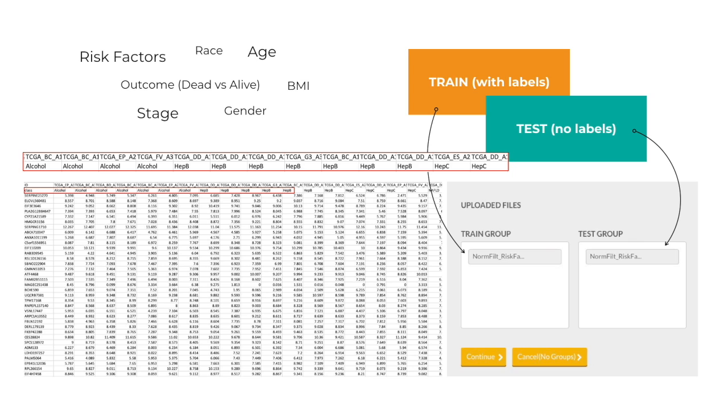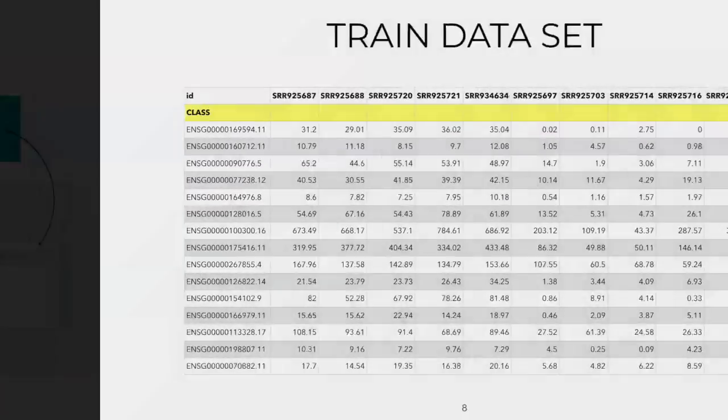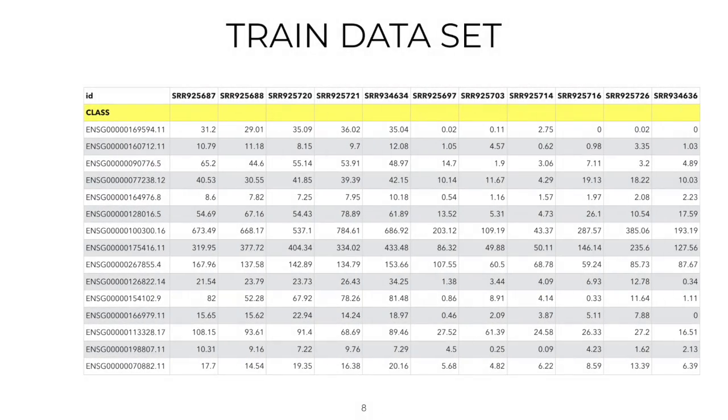To train the model, we'll have to label the data by using phenotypic information, such as cancer stage or subtype of risk factor. In the training data, we will have a special row that we will call class, and it will contain labels for each of the samples. Genes in the machine learning language are going to be called features, and samples are called objects.